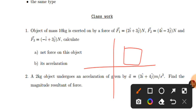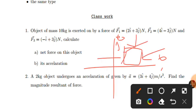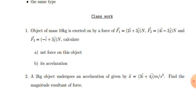This is the i direction and this is the j direction. The values are 2 and 3. So if you have a free body diagram...